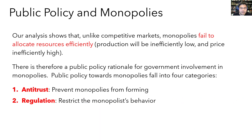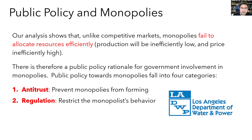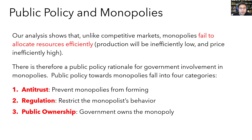Second, there's the regulation of monopolist behavior, which might take the form of price controls or other types of public oversight. For example, LADWP is a monopolist over Los Angeles's water and power, and it's controlled by a board of five members appointed by the LA City Council. So although the board members themselves aren't directly elected by citizens, the people who appoint them are.